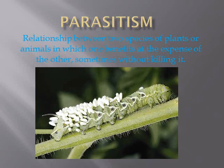In the photo, a tomato hornworm is covered with cocoons of braconid wasps. The braconid wasp is considered a parasitoid of the hornworm because it causes the hornworm to die as it pupates.